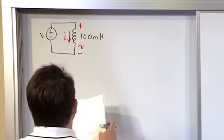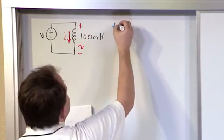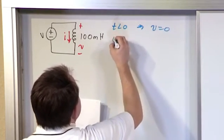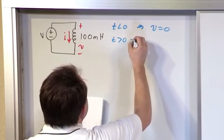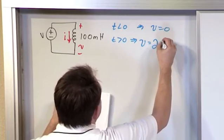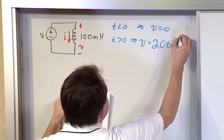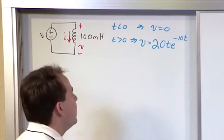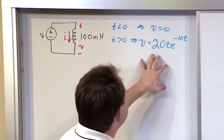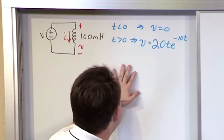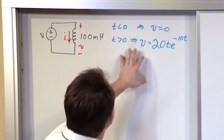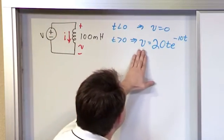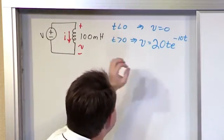Alright, so for this problem, we will say that for T is less than zero, the voltage across the inductor is zero. And for T is greater than zero, the voltage across the inductor will be 20 times T times E to the minus 10 T. So again, one of these crazy voltages that you probably won't see in a real circuit, but we need to know how circuits will behave. You never know what kind of application you might be working on.